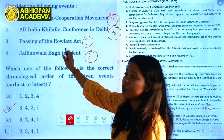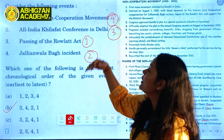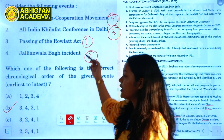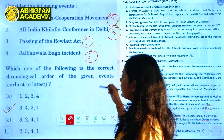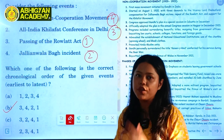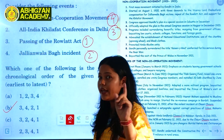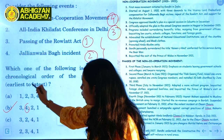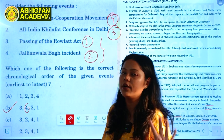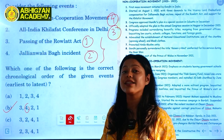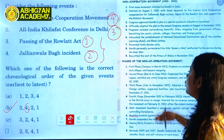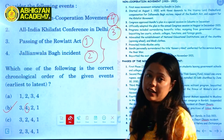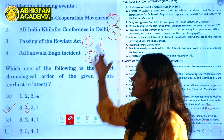So the correct chronological order is: first, the passing of the Rowlatt Act; second, the Jallianwala Bagh incident; third, the All India Khilafat Conference in Delhi; and fourth, the launch of the Non-Cooperation Movement. You can also use an elimination technique — if you know the first and last events, you can often identify the correct option without checking all four, since no other option may match.